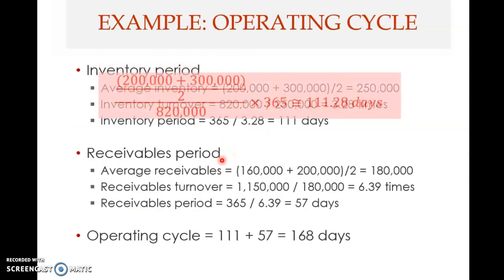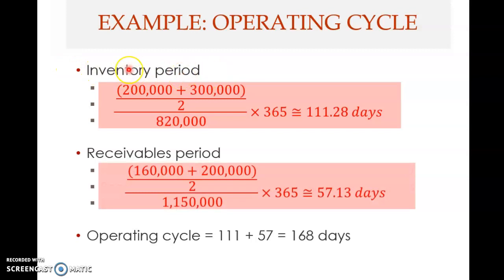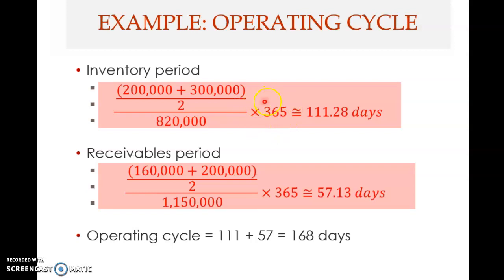First, we want to compute the inventory period. To compute the inventory period, we take the average inventory — that is, the beginning inventory plus the ending inventory — add these two and divide by two to get the average inventory. Then divide by the cost of goods sold, which is $820,000, and multiply by 365 days.